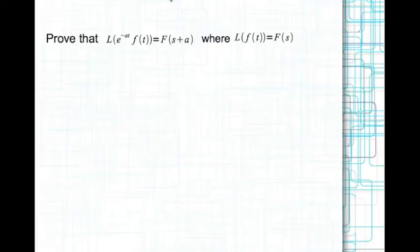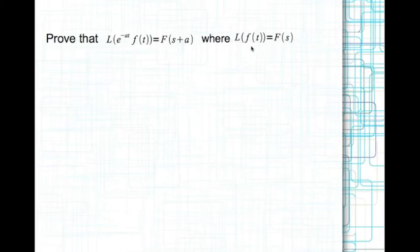The second rule we are looking at is the Laplace transform of a time domain function f of t multiplied by e to the power of minus a t. The Laplace transform of this entire expression is capital F of s plus a, where capital F of s is the Laplace transform of f of t. Essentially what this says is you replace s by s plus a to get the Laplace transform of e to the power of minus a t times f of t.